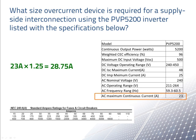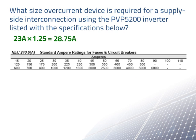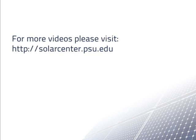NEC standard 240.6 lists standard ampere ratings for fuses and circuit breakers. NEC 240.4 permits the next largest standard size overcurrent protection device to be used. The next highest size above 28.75 amps is 30 amps.